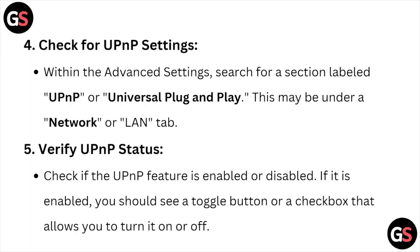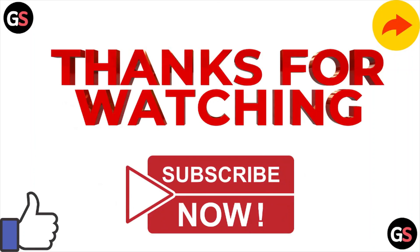The fifth step is to verify the UPnP status. Check if the UPnP feature is enabled or disabled. If it is enabled, you should see a toggle button or checkbox that allows you to turn it on or off.